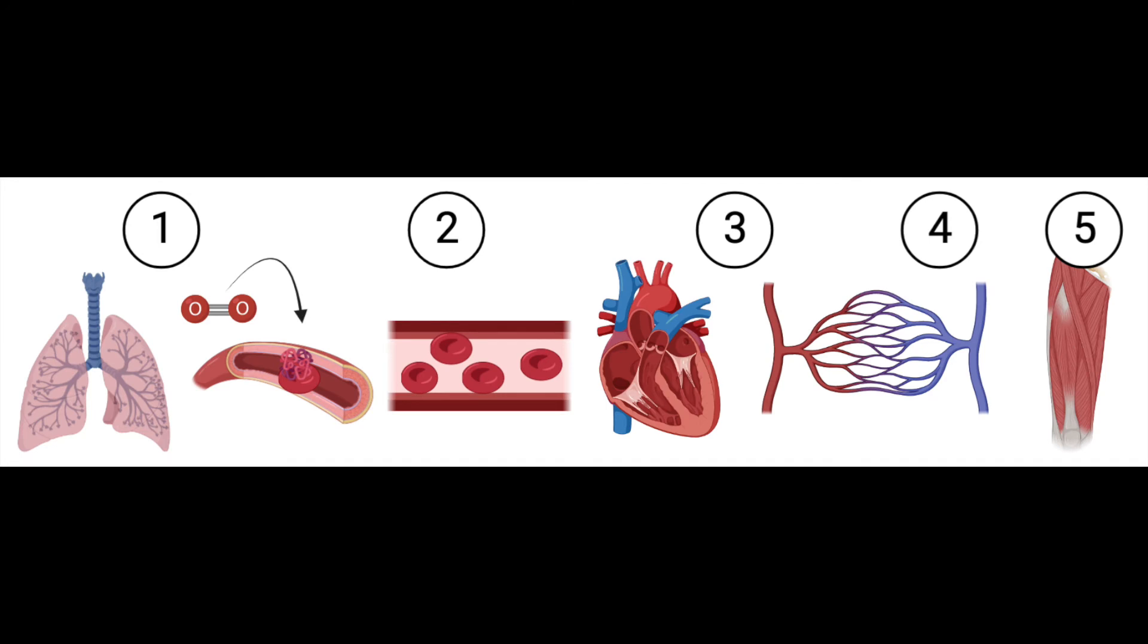Now let's look at the oxygen delivery process closer. From the lungs, one, oxygen diffuses into arteries and binds to a molecule called hemoglobin, which is found on red blood cells. Two, oxygenated blood moves to the heart through vessels called arteries.